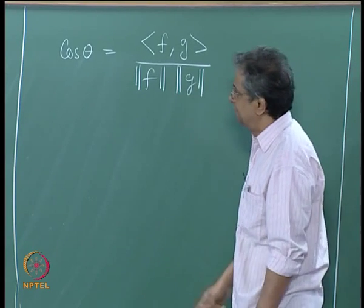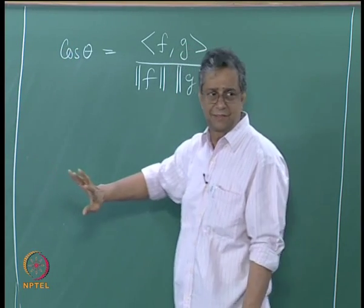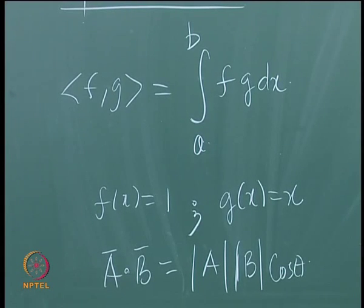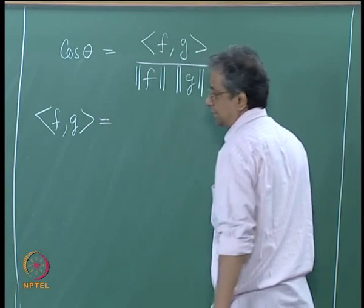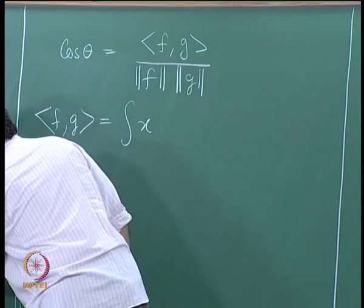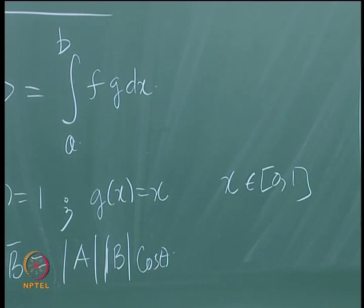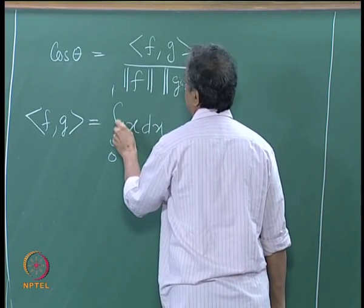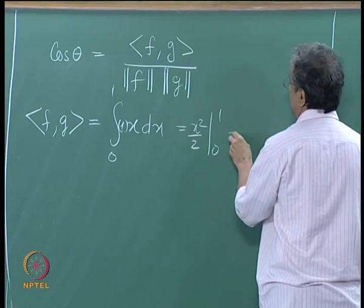We have already used the property that theta equals pi by 2 — we said two functions are orthogonal, we already did that yesterday. The question I am asking: is it possible to find the angle between functions f and g as given? So what is f dot g? With the functions defined on the interval x from 0 to 1, it is the integral of 1 times x dx, which gives x squared by 2 between 0 and 1, which is one half.